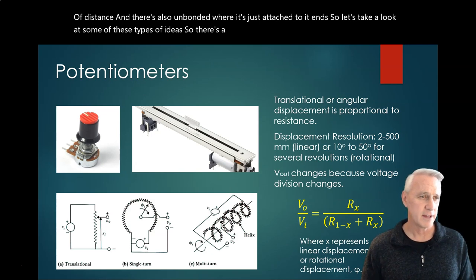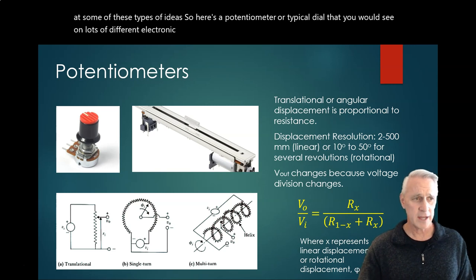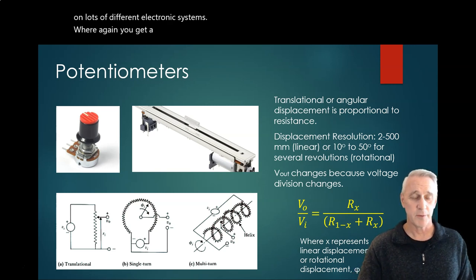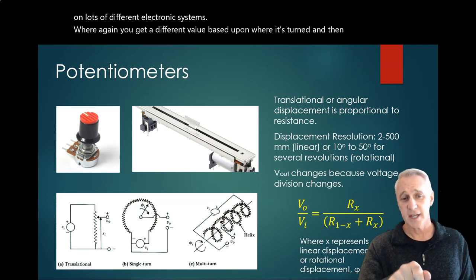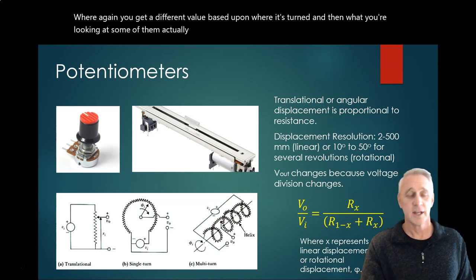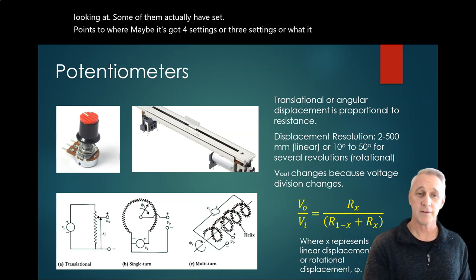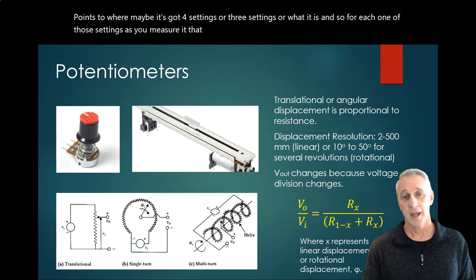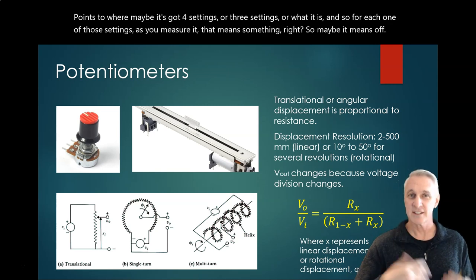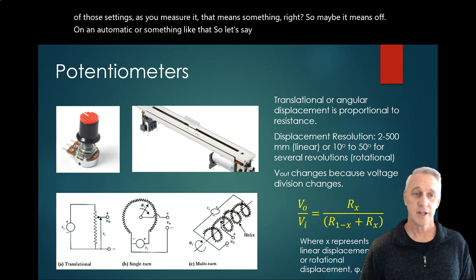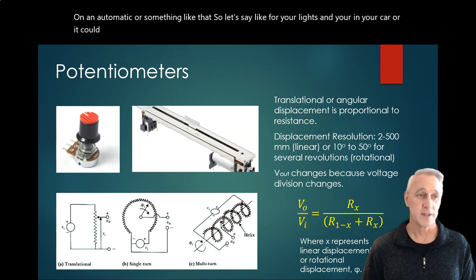So there's a potentiometer, a typical dial that you would see on lots of different electronic systems, where again, you get a different value based upon where it's turned. Some of them actually have set points where maybe it's got four settings or three settings. And so for each one of those settings, as you measure it, that means something. So maybe it means off, on, and automatic or something like that, like for your lights in your car.